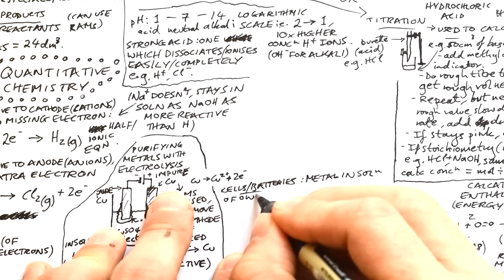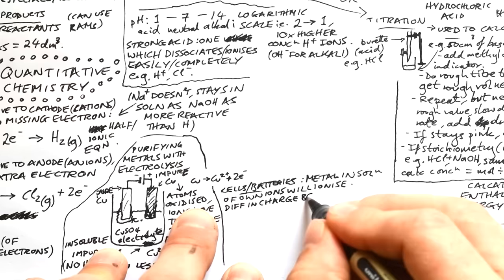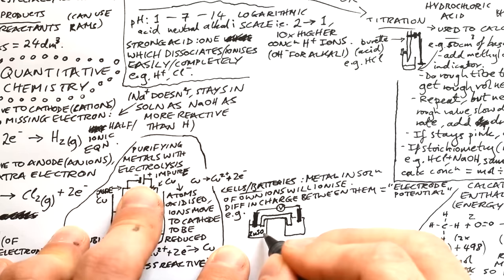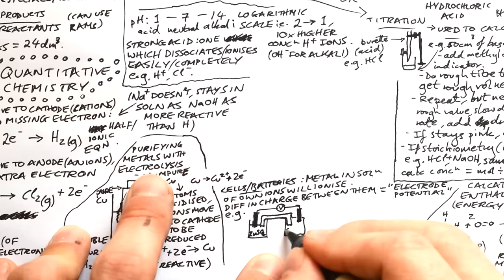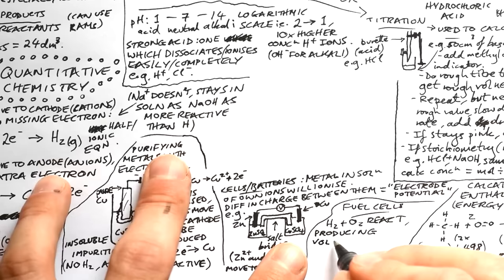Cells or batteries work because metals in a solution of their own ions will ionize. The difference in charge between the electrode and the solution is called the electrode potential. We set up two half-cells — say zinc in zinc sulfate and copper in copper sulfate — and the potential difference between the electrodes drives the current. A salt bridge connects the two solutions so ions can move between them.